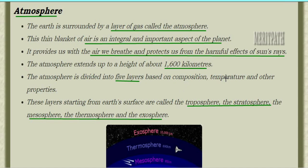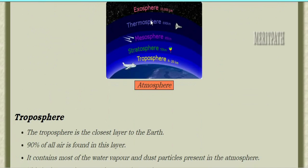The atmosphere is divided into five layers on the basis of composition, temperature, and other properties. The five layer names are: troposphere, stratosphere, mesosphere, thermosphere, and exosphere. Now let's study in detail about these five layers of the atmosphere. In this image we can see exosphere, thermosphere, mesosphere, stratosphere, and troposphere.